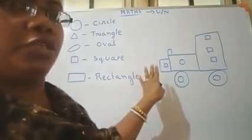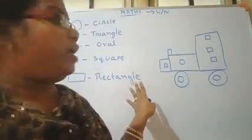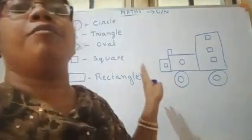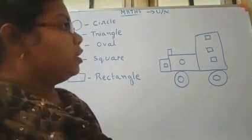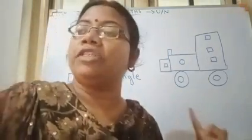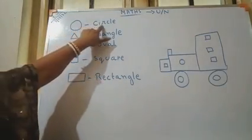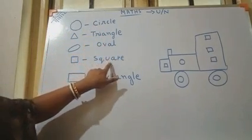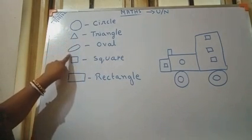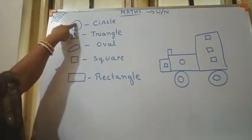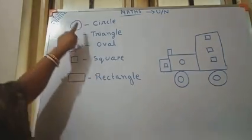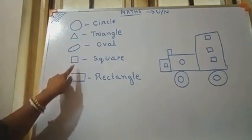Suppose this is the picture and you have to identify how many circles are there, how many squares are there, how many rectangles are there, how many triangles. I will write here and you will have to just identify how many are there. So: circle, triangle, oval, square, rectangle. Circle, triangle, oval, square, rectangle. Circle, triangle, oval, square, rectangle. Again: circle, triangle, oval, square, rectangle.